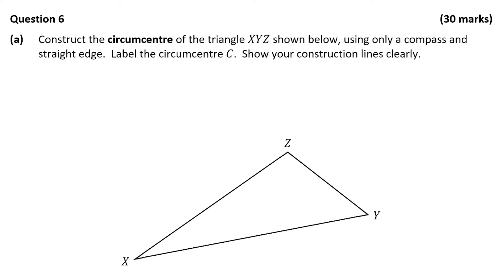In question A we're asked to construct the circumcenter of the triangle XYZ using only a compass and a straight edge. We're asked to label the circumcenter C and to show all our construction lines clearly — that basically means don't rub anything out. To do this, you want to construct perpendicular bisectors of two sides of the triangle, then find their point of intersection, which is your circumcenter.